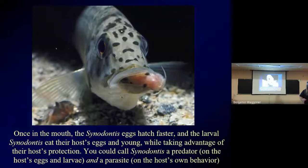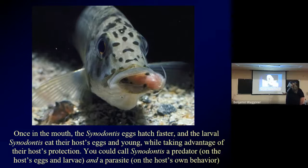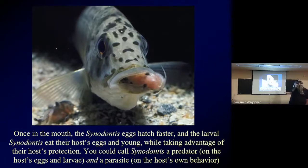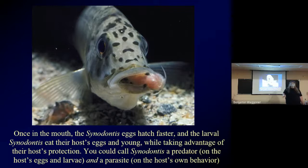Once inside the mouth, the Synodontis eggs hatch faster, and the Synodontis babies start eating their host's eggs and young while taking advantage of the cichlid parent's protection. The adult Synodontis is a predator because it eats cichlid eggs; the baby Synodontis is a predator because it eats the host eggs and larvae, and at the same time a parasite on the host's behavior. These host-parasite relationships can get pretty subtle — it's neat to find an organism that is both a parasite and a predator in different ways.